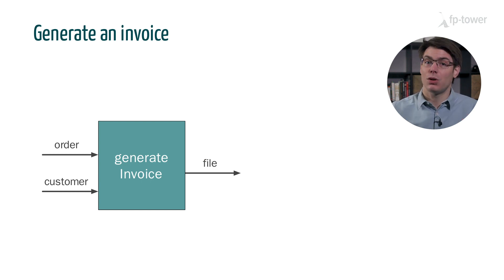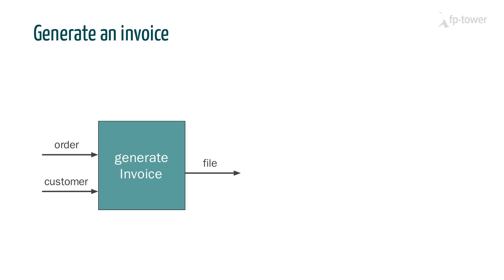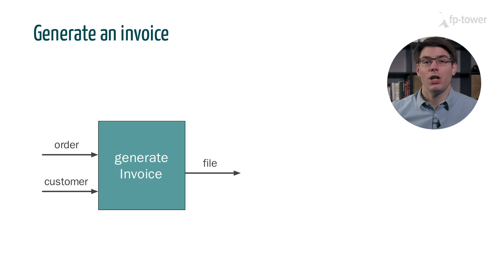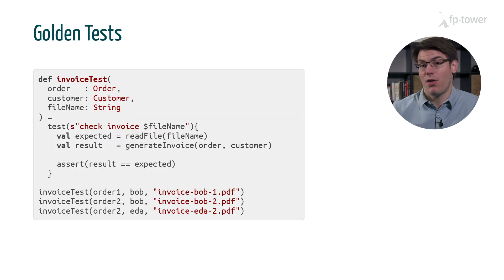Now what do you think is wrong with this design? Take a minute or two to think about it. There are several issues. The first we consider is testing. How are we going to test this function? We could generate a couple of invoices and manually check that they look as we expect, then we could save these files in our code base and write a test for each of them.